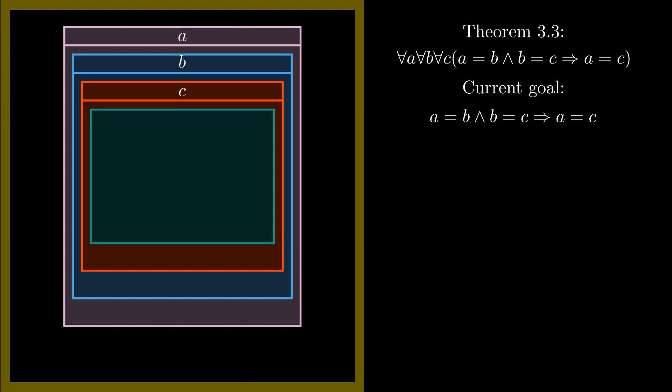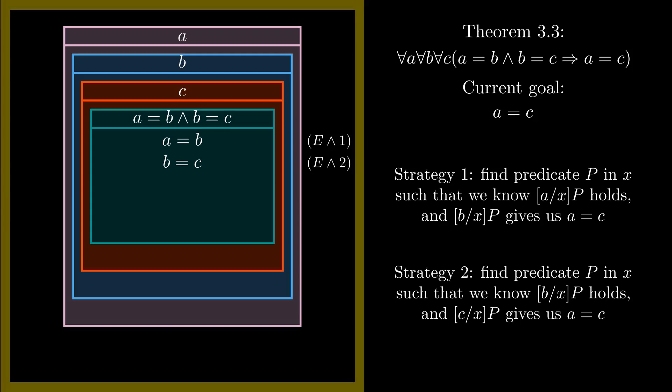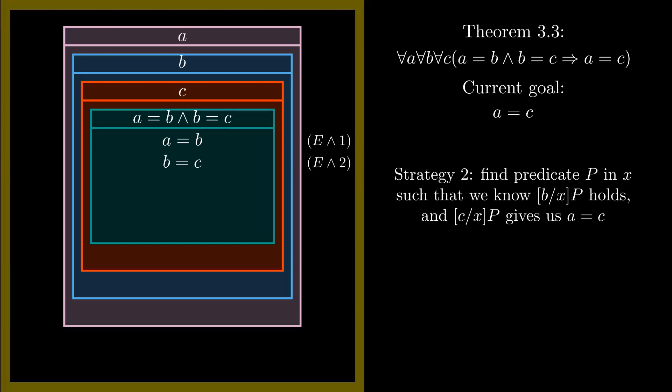Then we introduce the assumption that a equals b and b equals c. It's going to be useful for us to split this and into its component parts. We apply both of our elimination rules for AND to get that a equals b and that b equals c separately. Now we want to prove that a equals c. What property can we find that when we replace either a with b or b with c, we get a equals c? Replacing a with b doesn't seem like it'll help us, since b doesn't appear in the expression we want to prove. So let's try replacing b with c. We can pick our property to be this one, a equals x. If we replace x with b, we get a equals b, which we already know holds. If we replace x with c, we get a equals c, which is what we want to prove.